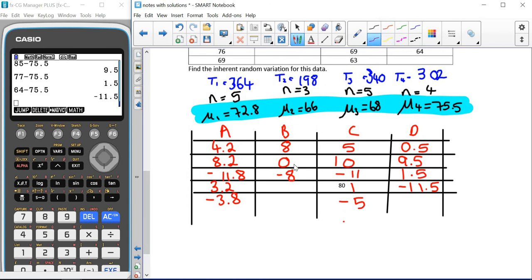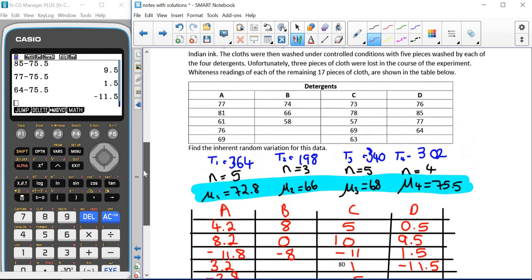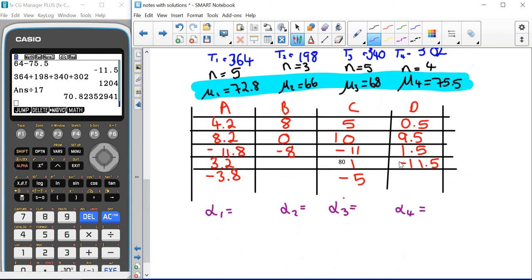The last thing that someone could ask you to have a look at would be the alphas. So alpha 1, alpha 2, alpha 3 and alpha 4. These are the difference between the overall mean and the mean for each one of the groups. If we're trying to find the mean of all of these numbers, we know all the totals for each one of the groups: 364, 198, 340 and 302. If we divide that by the total number of pieces of data that we have here, which is 17, we end up with our overall mean being 1204 divided by 17.